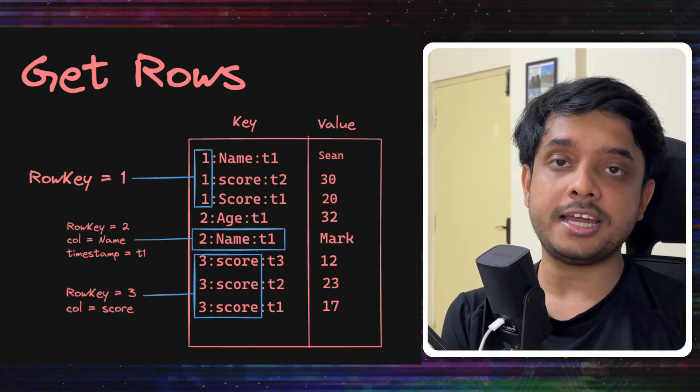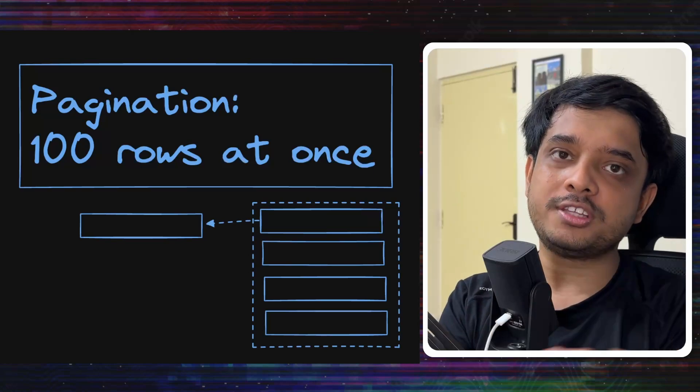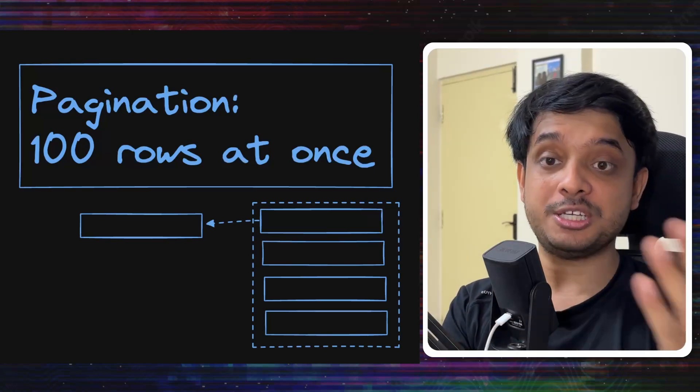Even if a time range is given to you, you can efficiently and easily filter out the required data since the timestamp is sorted. One more good thing that we can support when getting rows is pagination.